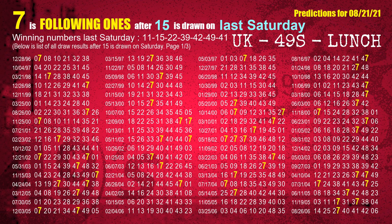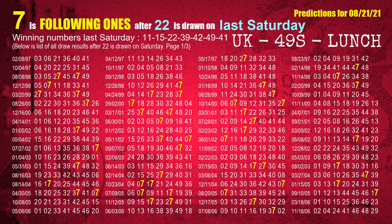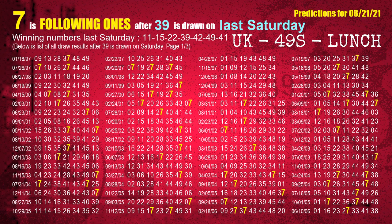The second winning number last Saturday is 15 — the most frequently following units digit is 7 when 15 is the winning number on last Saturday. The third winning number last Saturday is 22 — the most frequently following units digit is 7 when 22 is the winning number on last Saturday. The fourth winning number last Saturday is 39 — the most frequently following units digit is 7 when 39 is the winning number on last Saturday.